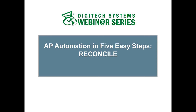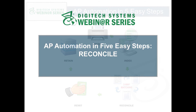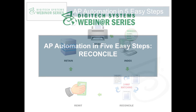Welcome to today's webinar, AP Automation in 5 Easy Steps. Today we're talking about Step 3, which is Reconcile. Did you know that the average time to process an invoice goes from more than 11 days to less than 4, when companies use automated workflow tools to drive AP? Let's dive into how you can make that happen at your organization.